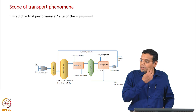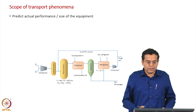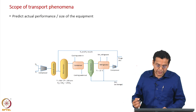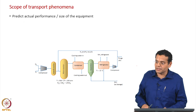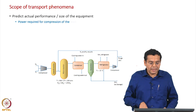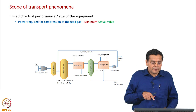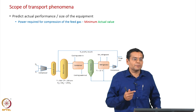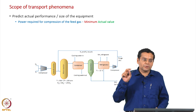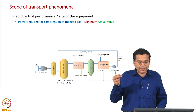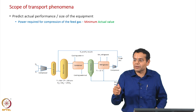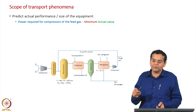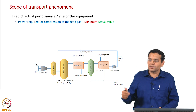How does the transfer phenomena approach improve the scope compared to thermodynamics? We predict the actual performance and size of the equipment. In the earlier case, we predicted the power required for compression of the feed gas — it was a minimum value. Based on process calculations it is less accurate; based on thermodynamics it is still more accurate, but still a minimum value. Using a transfer phenomena approach, you find the actual value, which is much closer to reality.